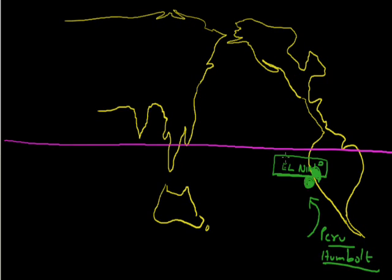This El Niño also plays an important role in world climate and in the Indian monsoon. When El Niño occurs — at least every seventh year — we see a lot of floods, droughts, storms, and cyclones in the world. When there is La Niña, we see a normal monsoon in India, but during El Niño we see abnormal monsoon — some parts of India receive very heavy rainfall above average, while other parts experience drought.